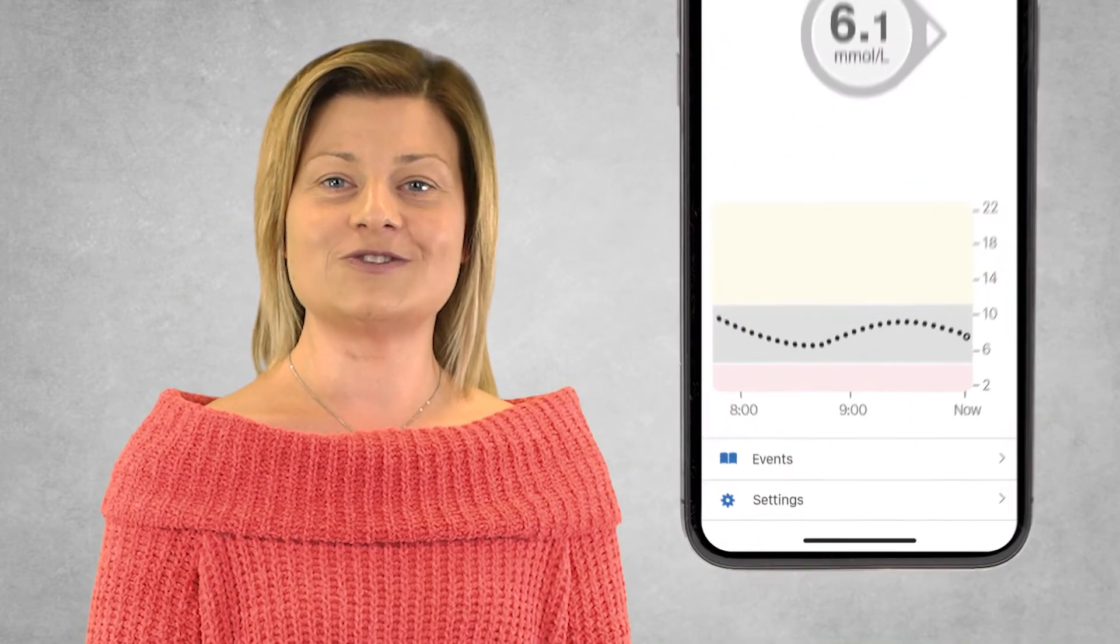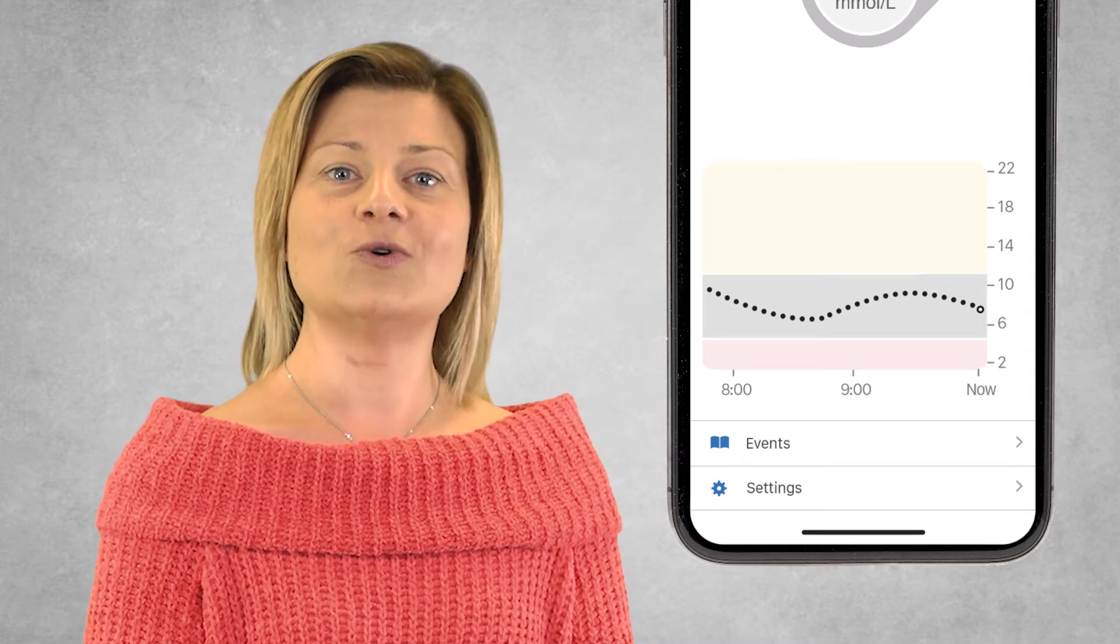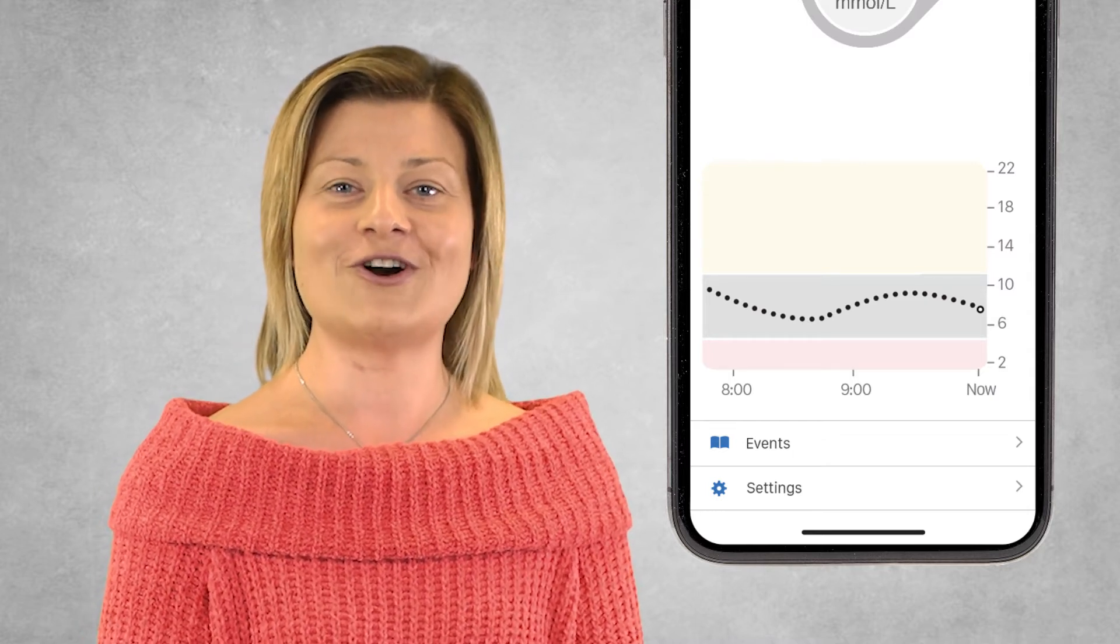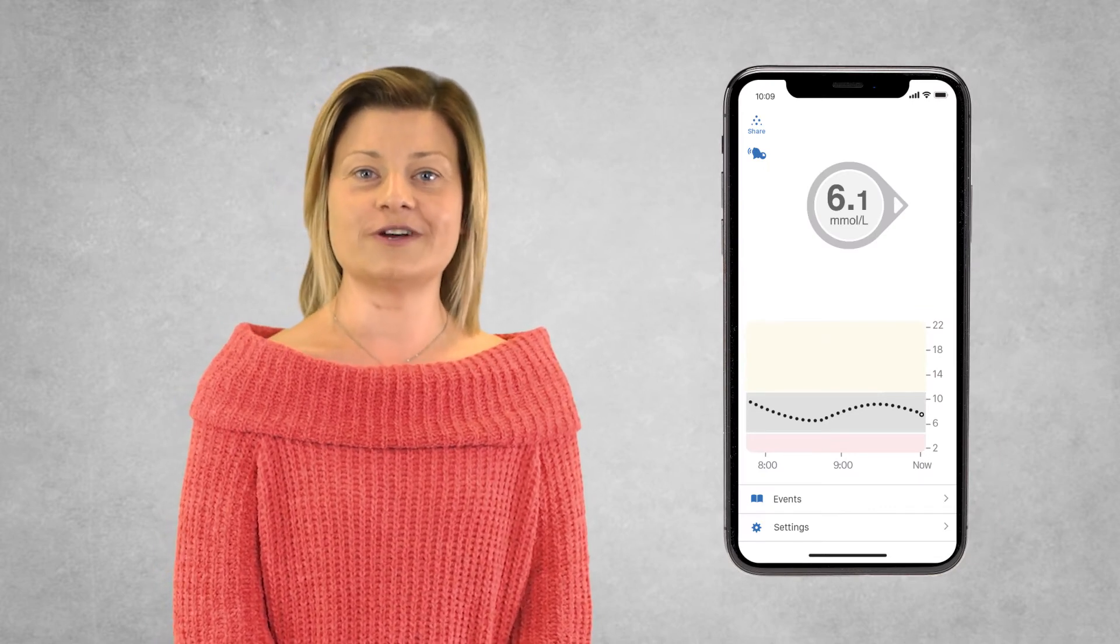Each of these dots is a glucose reading taken five minutes apart so you can see how your glucose levels are trending over time. The app also has arrows which show the speed and the direction your glucose is heading.